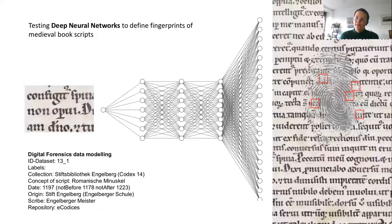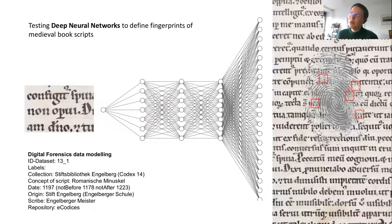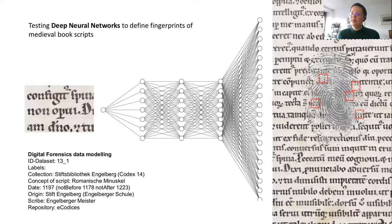In the next step, we feed annotated data — images each provided with ground truth labels including dating, origin, and script — into neural networks. We get numbers as output: the so-called fingerprint of the script. When we do that with a lot of data, we accumulate many fingerprints stored in a database. When you feed new images, the fingerprints are compared and you get as output the similar images — not numbers, but the actual similar manuscript images.